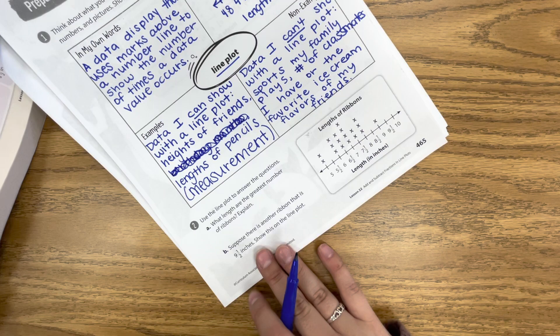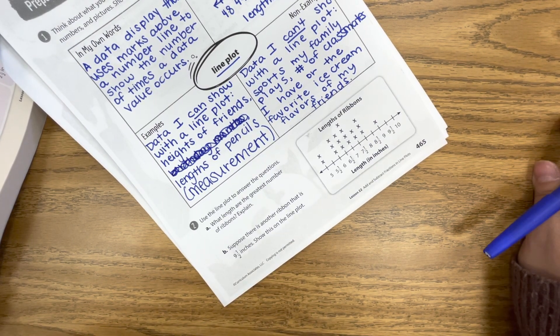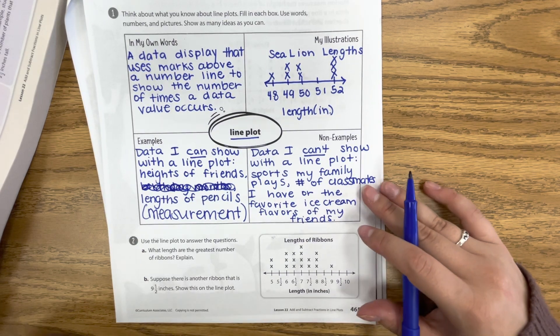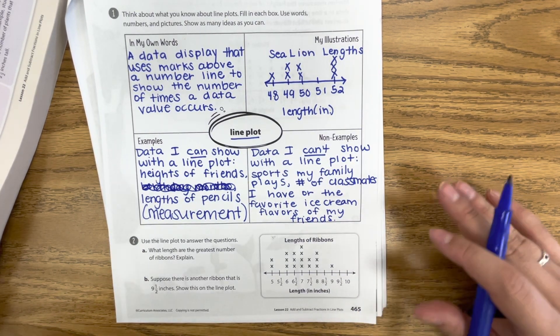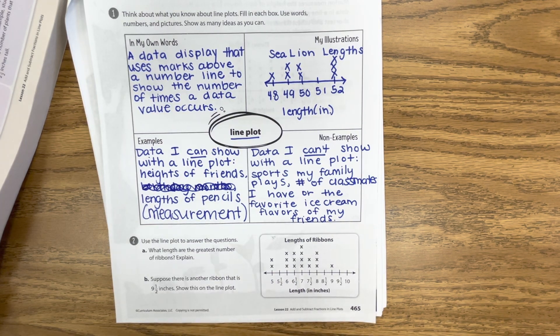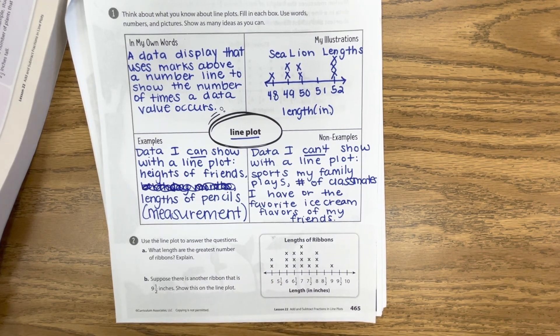But once you have our vocabulary word table figured out, you can move on to page 466. Just make sure you show me either on Seesaw or on Google Meet when you're done. Happy line plots!